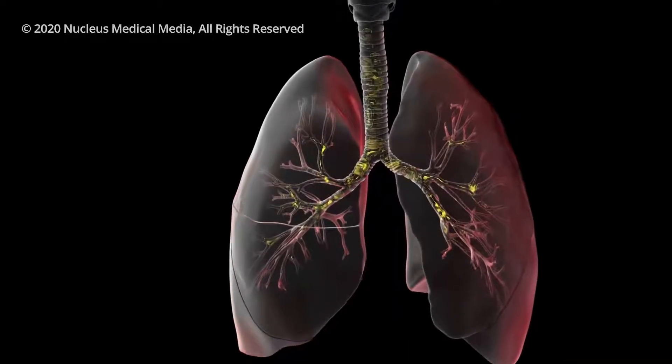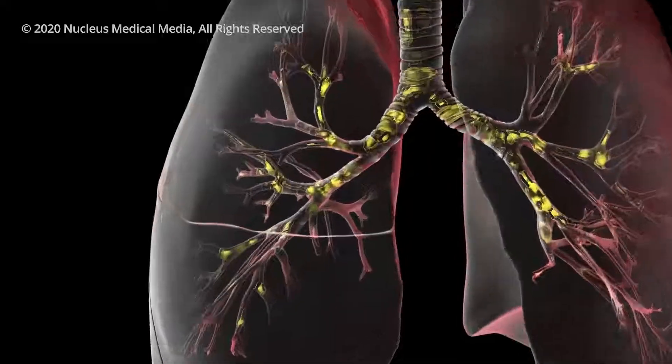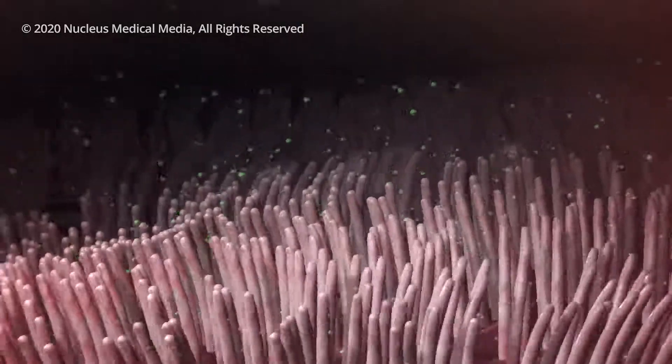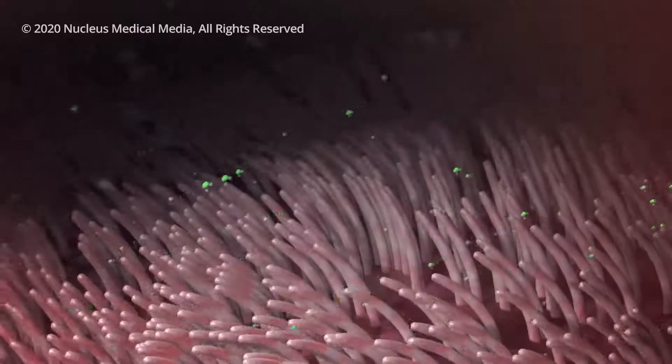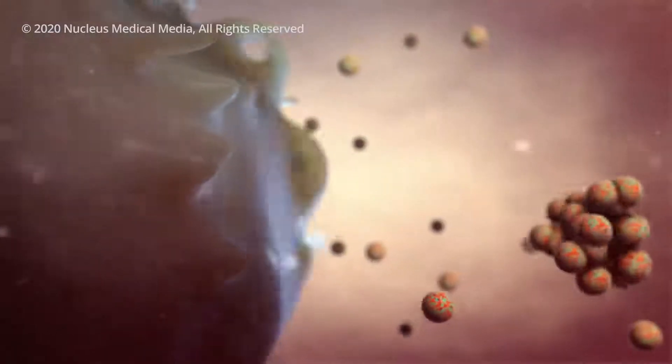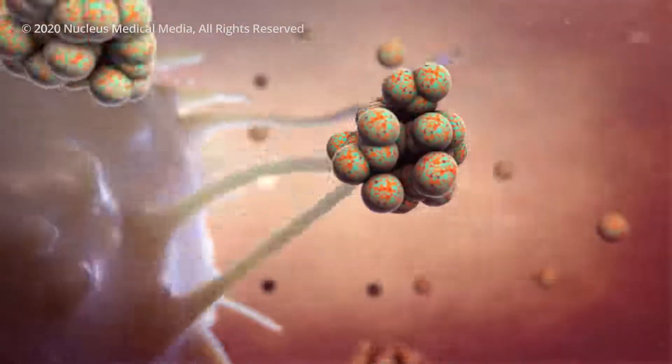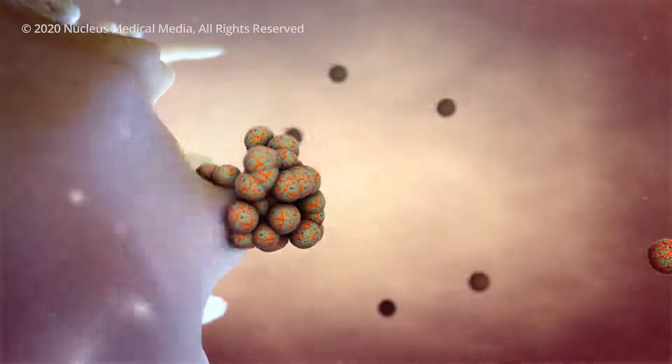Your airways catch most germs in the mucus that lines your trachea, bronchi, and bronchioles. In a healthy body, hair-like cilia lining the tubes constantly push the mucus and germs out of your airways, where you might expel them by coughing. Normally, cells of your immune system attack viruses and germs that make it past your mucus and cilia and enter your alveoli.